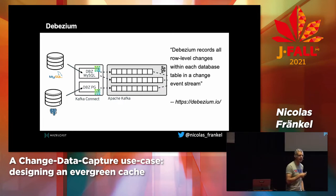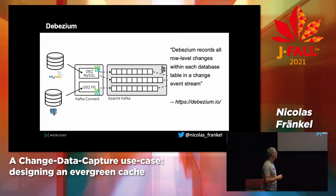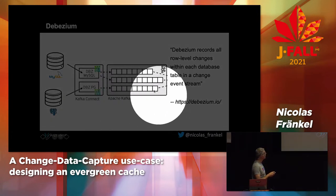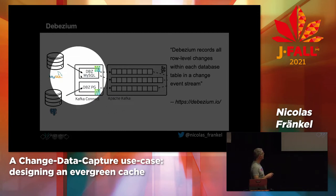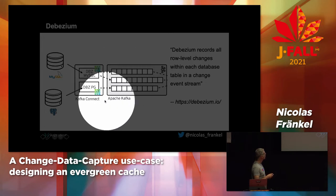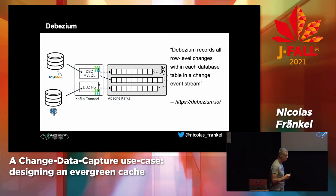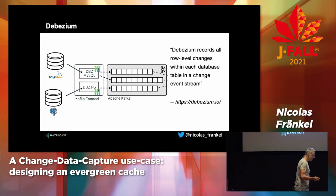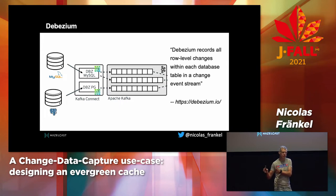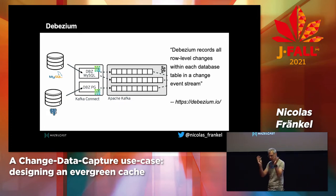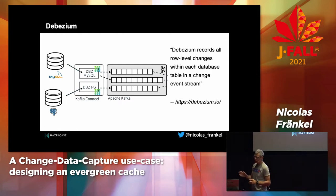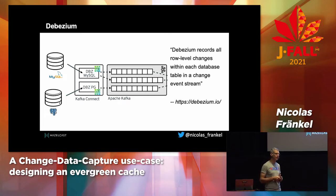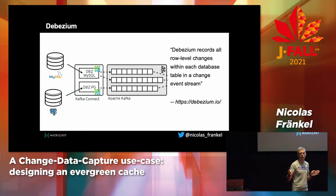Debezium was originally designed to play with Kafka. The idea was: you've got your Kafka cluster and your topics; whatever happens in the database, the connector writes into one or multiple topics. It still works like that. But would it make sense to put a Kafka cluster between our database and our cache? I see a lot of talks where Kafka solves all problems — be careful about that. There is no magic pill. Kafka has use cases, a lot of them, but between a cache and a database it has no use case.